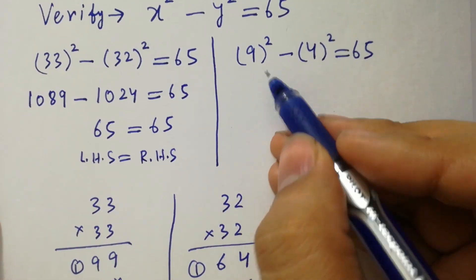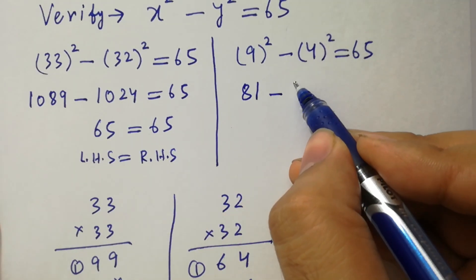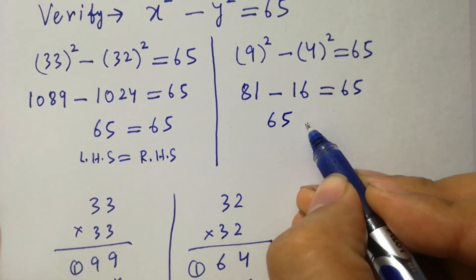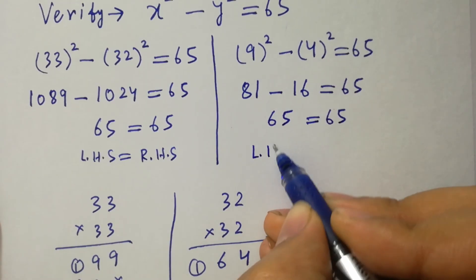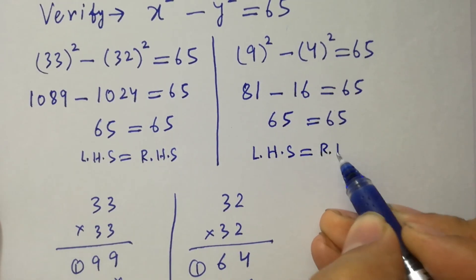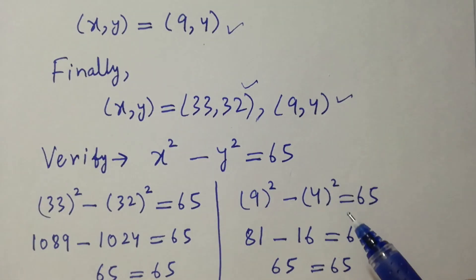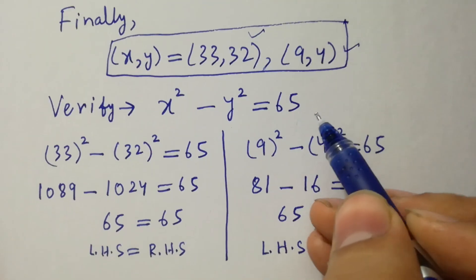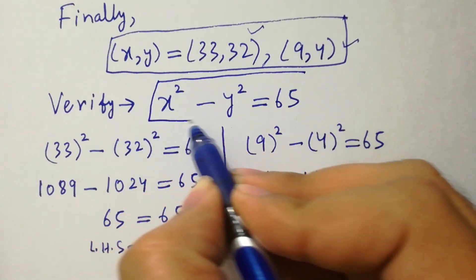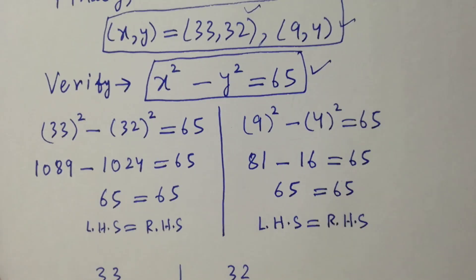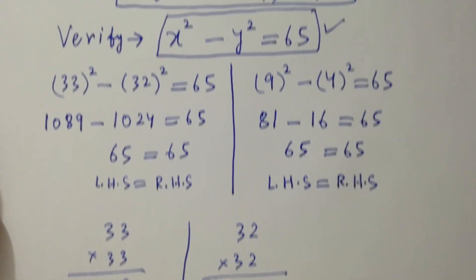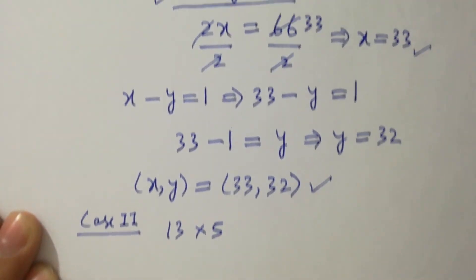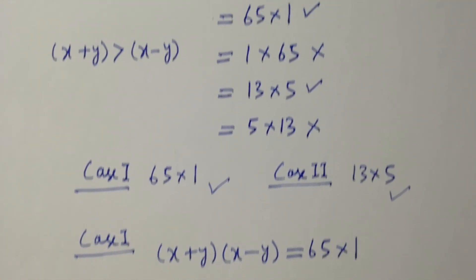This shows that the values of x and y — 33, 32 and 9, 4 — satisfy this equation of x squared minus y squared equals 65. Thanks for watching this video. Please subscribe to this channel to get notifications of my new videos, and don't forget to share these videos with your classmates and friends so that they also benefit from it. Okay, bye.